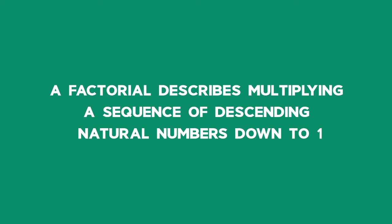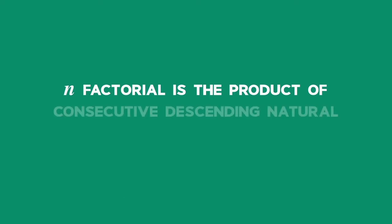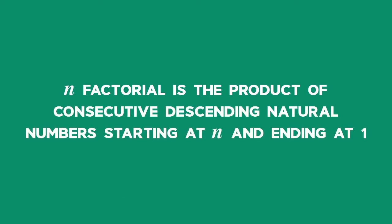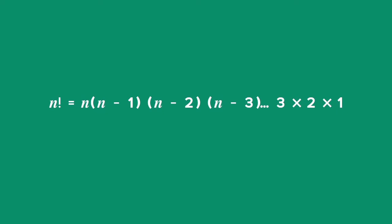Factorials. A factorial describes multiplying a sequence of descending natural numbers down to 1. The notation used is n factorial. n factorial is the product of consecutive descending natural numbers starting at n and ending at 1. n factorial is equal to n times n minus 1 times n minus 2 times n minus 3 and so on, until you get to 3 times 2 times 1.